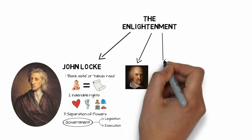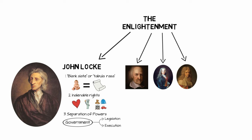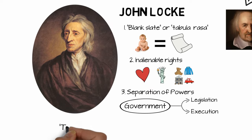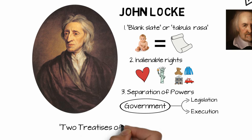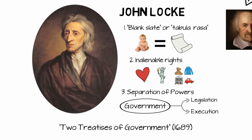Locke was a prolific philosopher, writing well over a dozen long works in his lifetime, some of which were published after his death. In the last video, I briefly mentioned his Two Treatises of Government, which was published anonymously in 1689. This is one of his most famous essays, and it's as long as several books, and he talks about a whole bunch of different topics that have a great deal of relevance today.